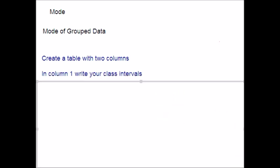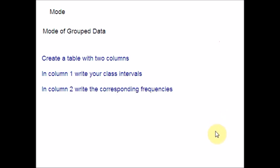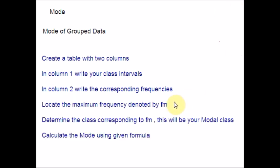Let me give you the steps first. You have to create a table with two columns. Step 2, in column 1, write your class intervals. Step 3, in column 2, write the corresponding frequencies. Step 4, locate the maximum frequency and it would be denoted by F suffix M. And then step 5, determine the class corresponding to FM. That will be your modal class. And finally, let me give you the formula for mode for grouped data.